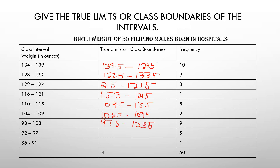Continuing: for 110 to 115 we get 109.5 to 115.5. For 104 to 109 we get 103.5 to 109.5. For 98 to 103 we get 97.5 to 103.5. For 92 to 97 we get 91.5 to 97.5. For 86 to 91 we get 85.5 to 91.5. That's how we get the true limits or class boundaries of the class interval.